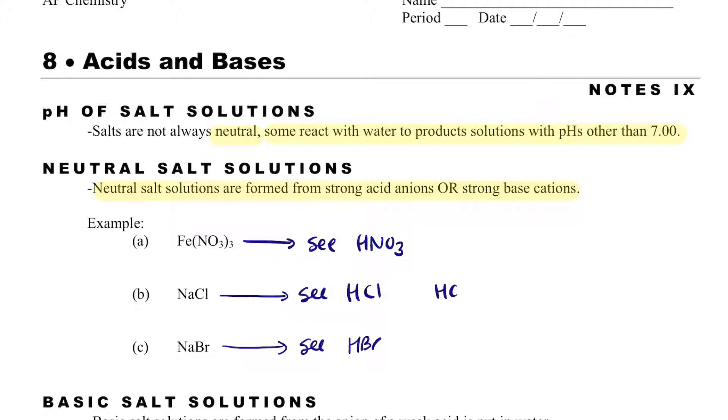Again, we can prove it. NaCl plus HOH will give me HCl plus NaOH, and we get strong acid and then we get strong base, so they're going to be neutral because both of them are strong.